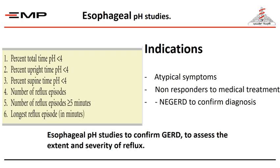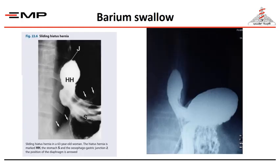The indications for pH study include: patients presenting with atypical symptoms, non-responders to medical treatment, and non-erosive gastroesophageal reflux disease to confirm the diagnosis. Barium swallow in Trendelenburg position is used to delineate the anatomy — as seen in the films, we can detect very large hiatal hernias.